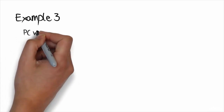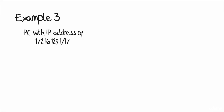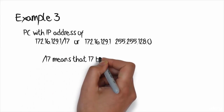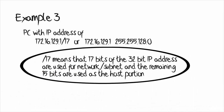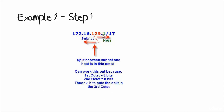Here's one more example using the binary method, and after this I'm going to show you the quick method. If a PC had an address of 172.16.129.1/17, or 172.16.129.1 with subnet mask 255.255.128.0, you would need to work out where the subnet and host portions are split. Slash 17 means 17 bits are used for network or subnet and the remaining 15 bits are the host portion. Since the first two octets account for 16 bits, the split is in the third octet.